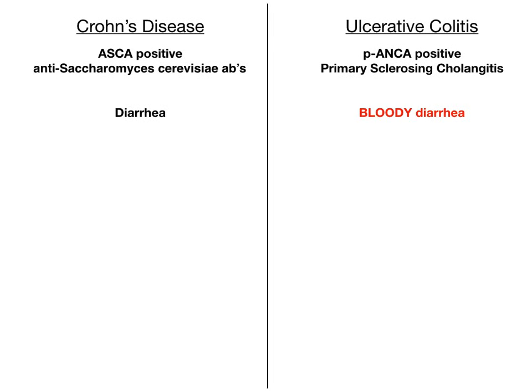Now let's talk about extra-intestinal associations — things you might see outside of the GI tract associated with inflammatory bowel disease. Some people think certain findings are specific to Crohn's or UC, but we don't have definitive research to say it's one or the other. So if you see any of these associations, think Crohn's or ulcerative colitis, but not necessarily one exclusively.